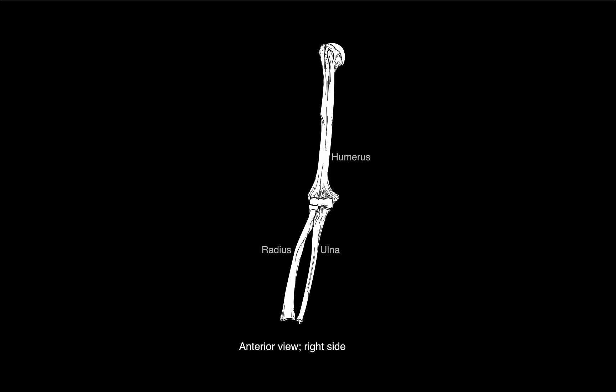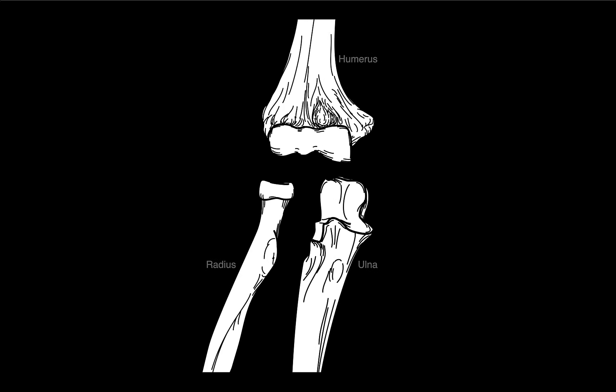Now from an anterior view blown up: there is the trochlea, which articulates with the trochlear notch on the ulna, and there's the capitulum, which then articulates with the radial head.